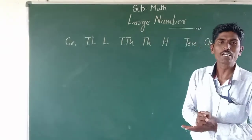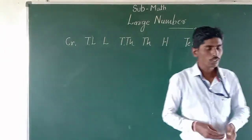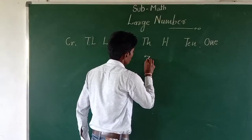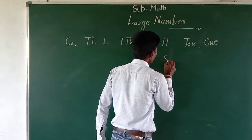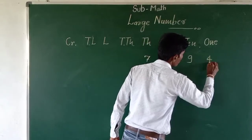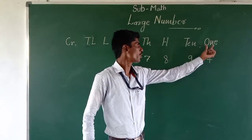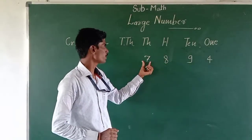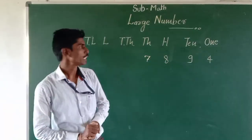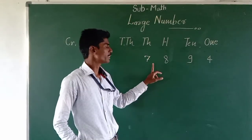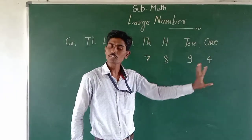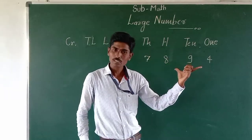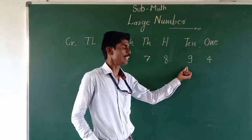So we will take an example about numbers and their values. Take the number 7894. This 4 is on the ones place, this 9 is on the tens place, this 8 is on the hundreds place, and this 7 is on the thousands place. That's why we can say that the value of this number is 7894. Due to the digit places of this number, we can call that number 7894.